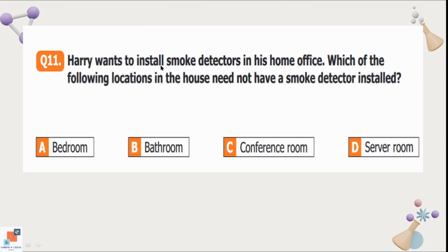Question number 11: When Harry wants to install smoke detectors in his home office, which of the following locations in the house need not have a smoke detector installed? Option A is bedroom. Option B is bathroom. Option C is conference room. And option D is server room. If we look at all types of room we don't need a detector in bathroom.